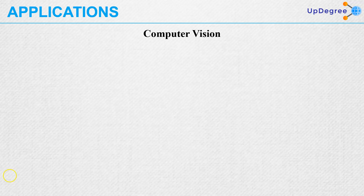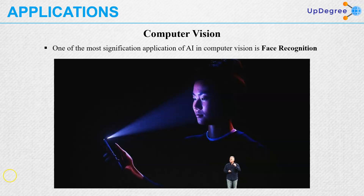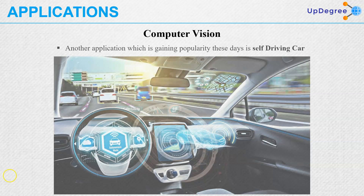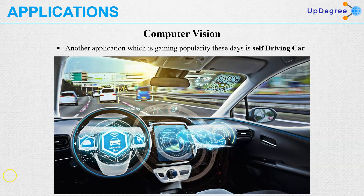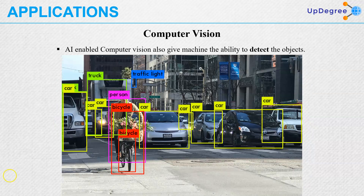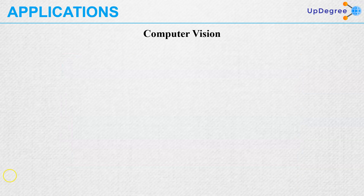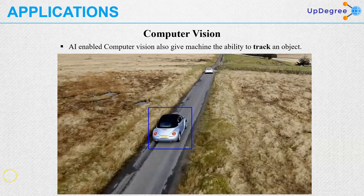Then comes applications in computer vision. One of the most significant applications of AI and machine learning in computer vision is face recognition. Another application gaining popularity these days is the self-driving car. Companies like Google and Uber are now investing in self-driving cars. AI-enabled computer vision also gives machines the ability to detect and track objects.